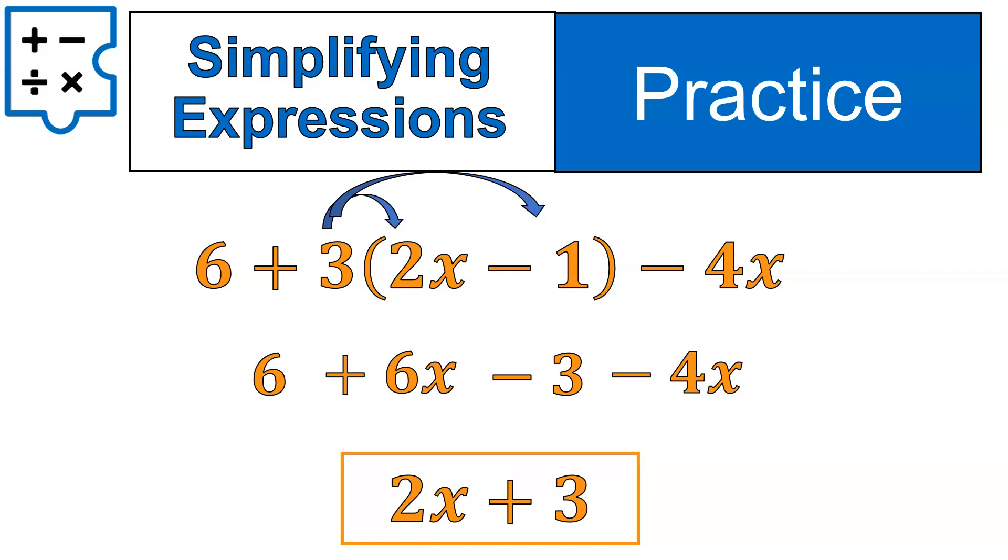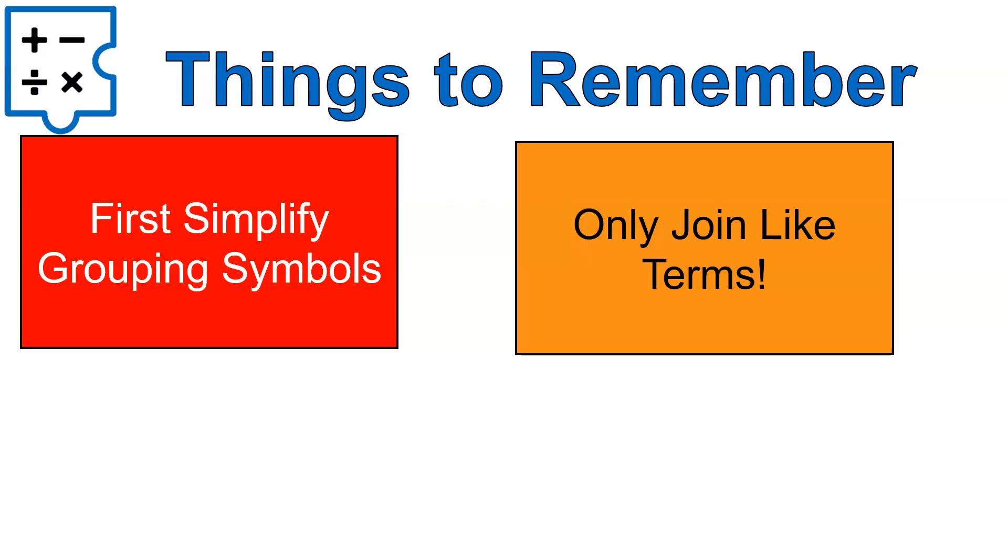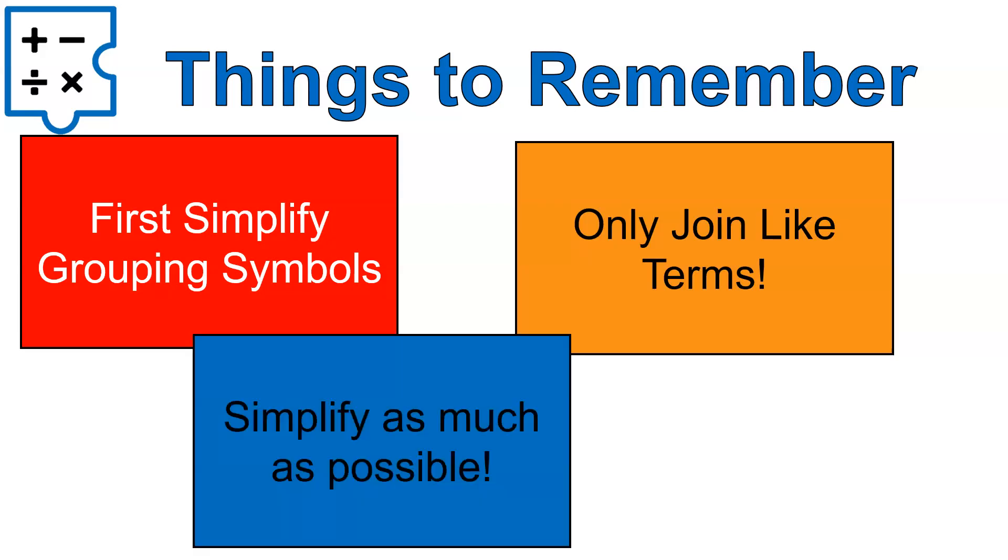Numbers with variables go first, and then numbers are added on the end. I hope that was fun for you. I hope it was helpful. A couple things to just remember. We had first, we simplify everything inside grouping symbols, then we join together just the like terms, and simplify as much as possible. Hope that was helpful. Have a wonderful day.